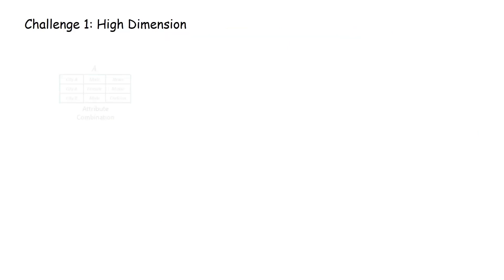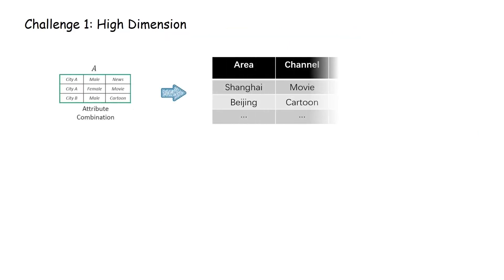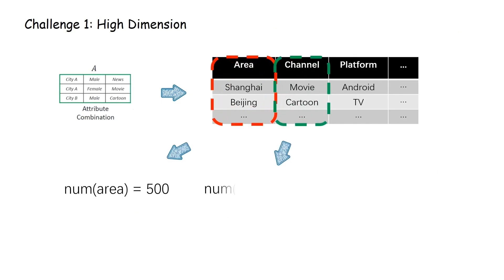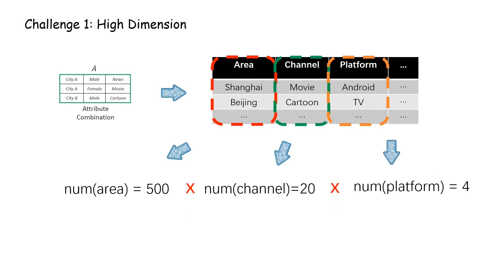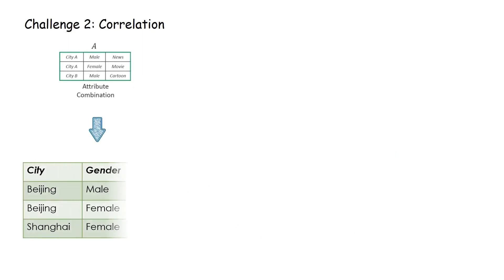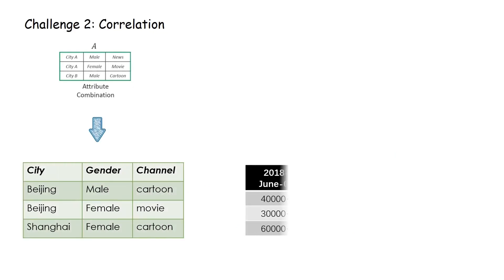Challenge one: high dimension. Consider that user types are described by three attributes — 500 areas, 20 channels, and 4 platforms — making the number of their combinations quite large. Another challenge is the potential correlation between different attribute combinations.